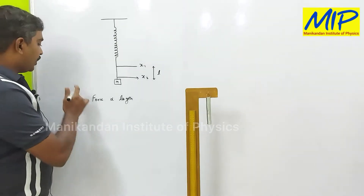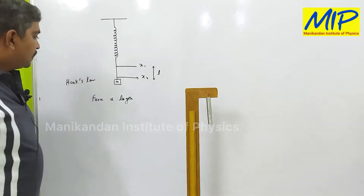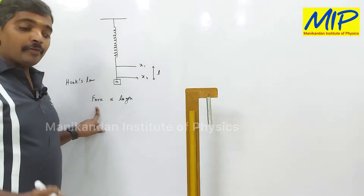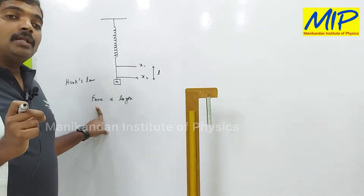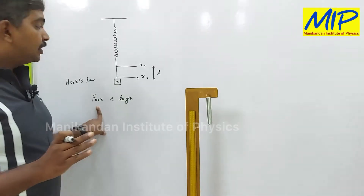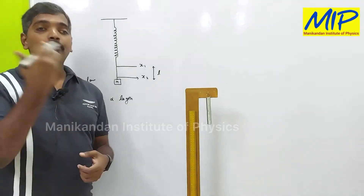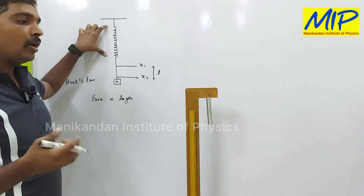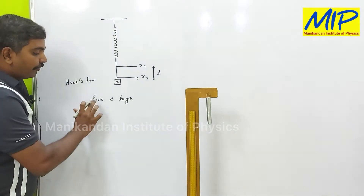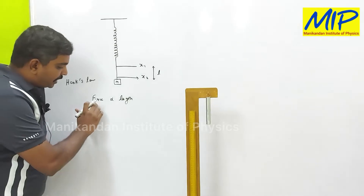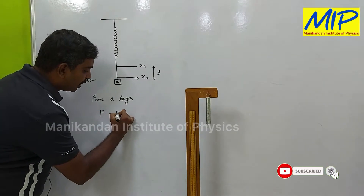This is called Hooke's Law. The force acting on the spring is equivalent to the spring force, or the restoring force. One force acts downward and the spring force acts in the upward direction, so the force acting on the spring equals the spring force. Replacing the proportional symbol with a constant, F is equal to k times l.